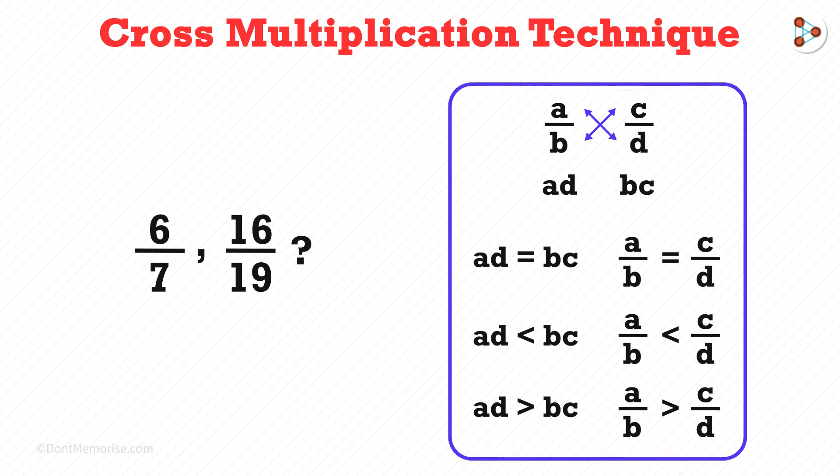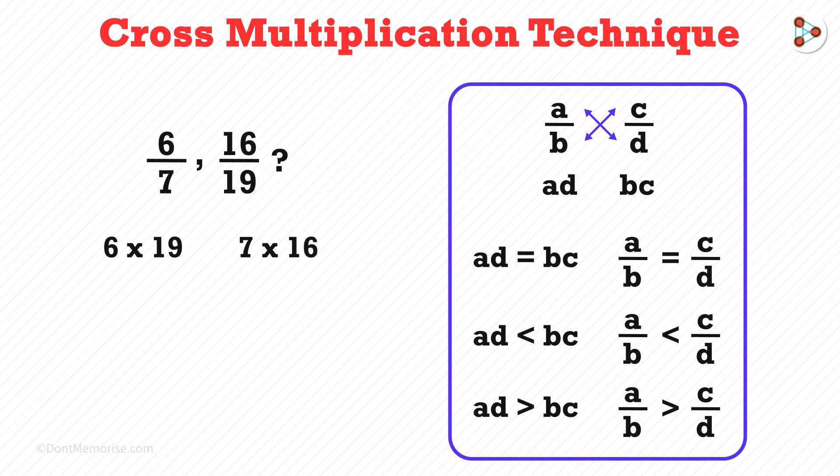How can we implement this? In these two fractions, we will find the values of 6 times 19 and 7 times 16. The answers to this are 114 and 112. We can confidently say that 6 over 7 is greater than 16 over 19.